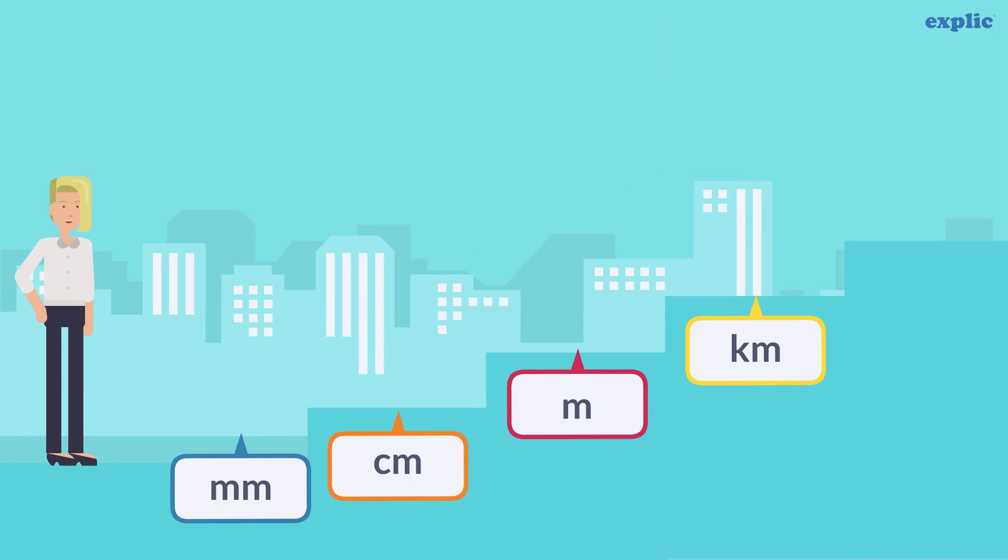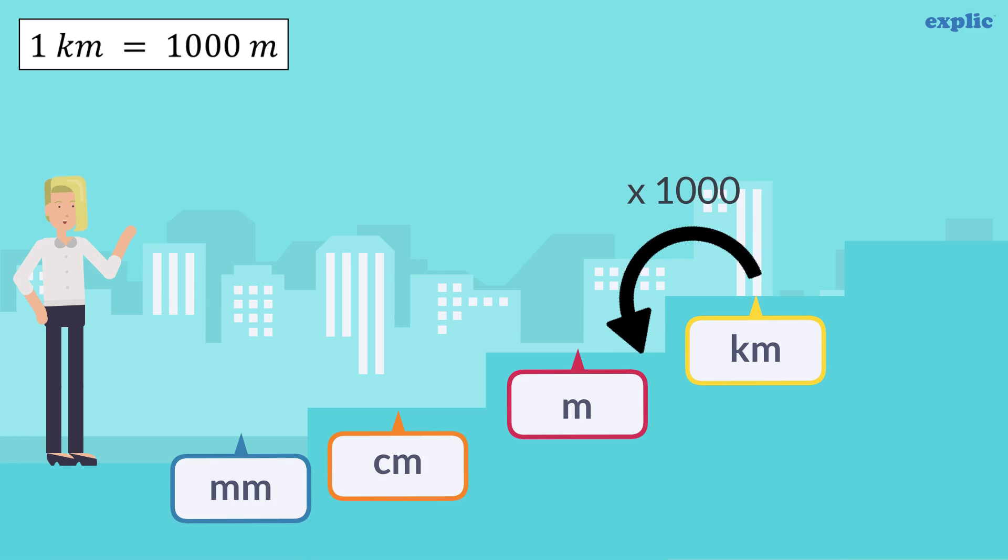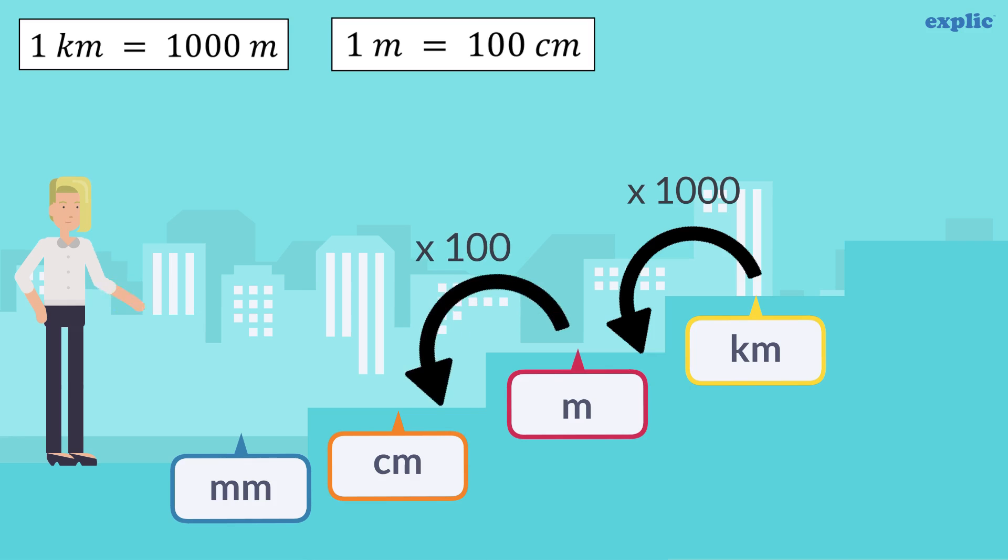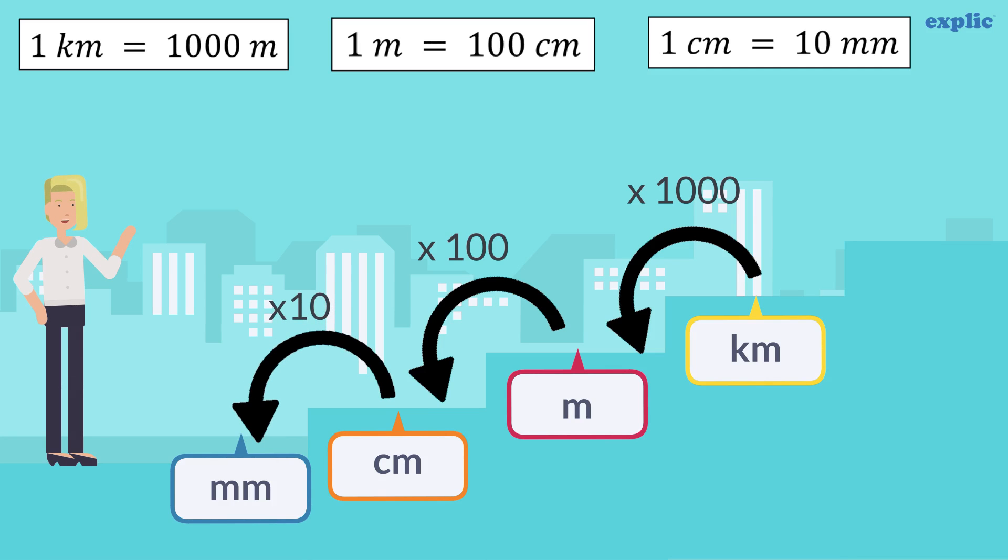To convert kilometers into meters, divide by 1000. To convert meters into centimeters, divide by 100. Similarly, to convert centimeters into millimeters, divide by 10.